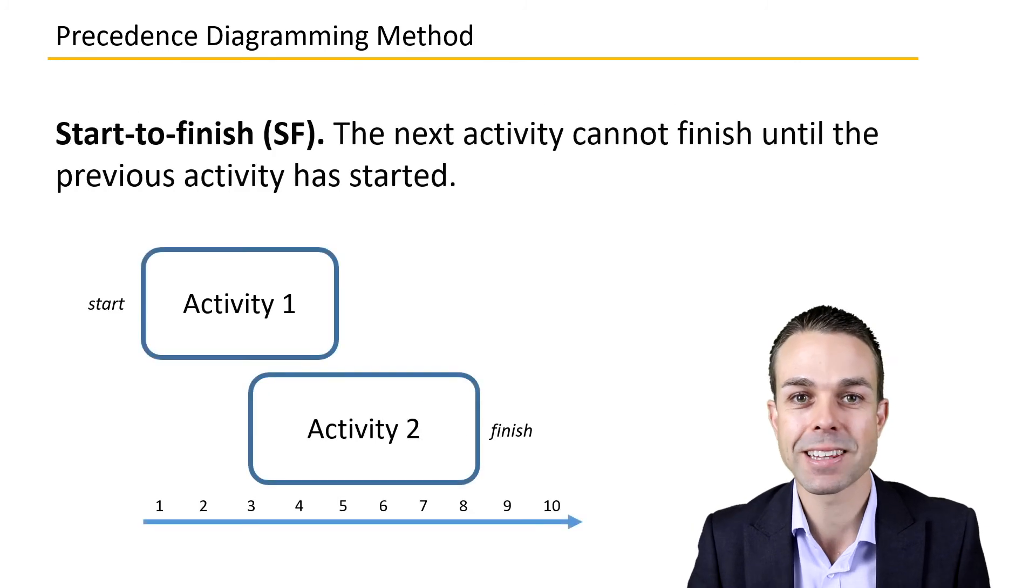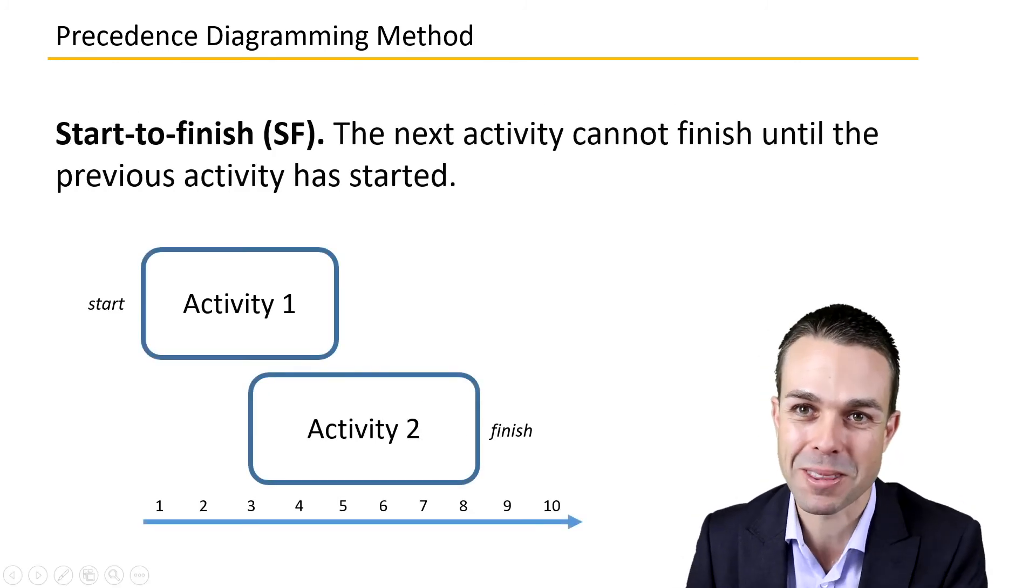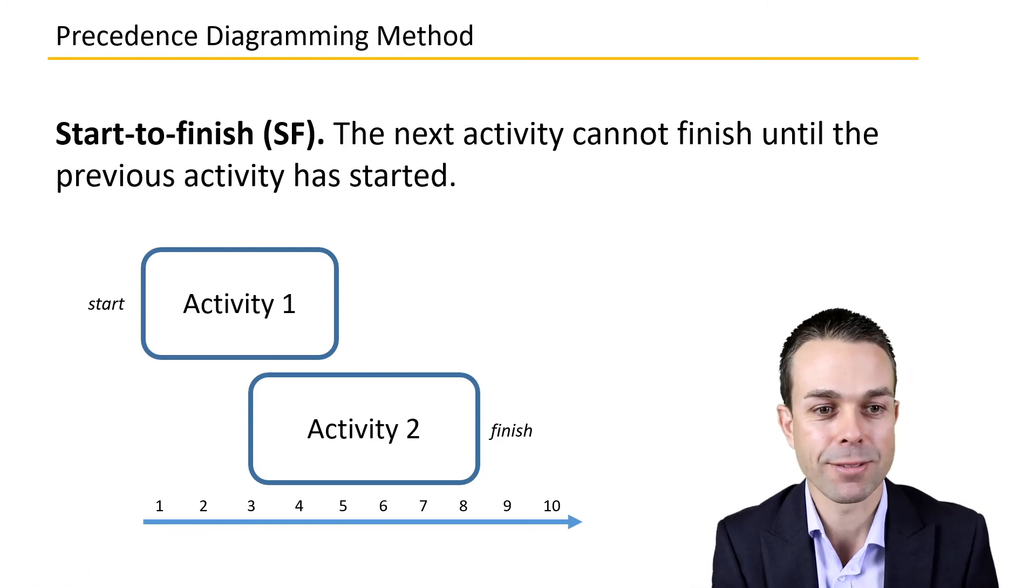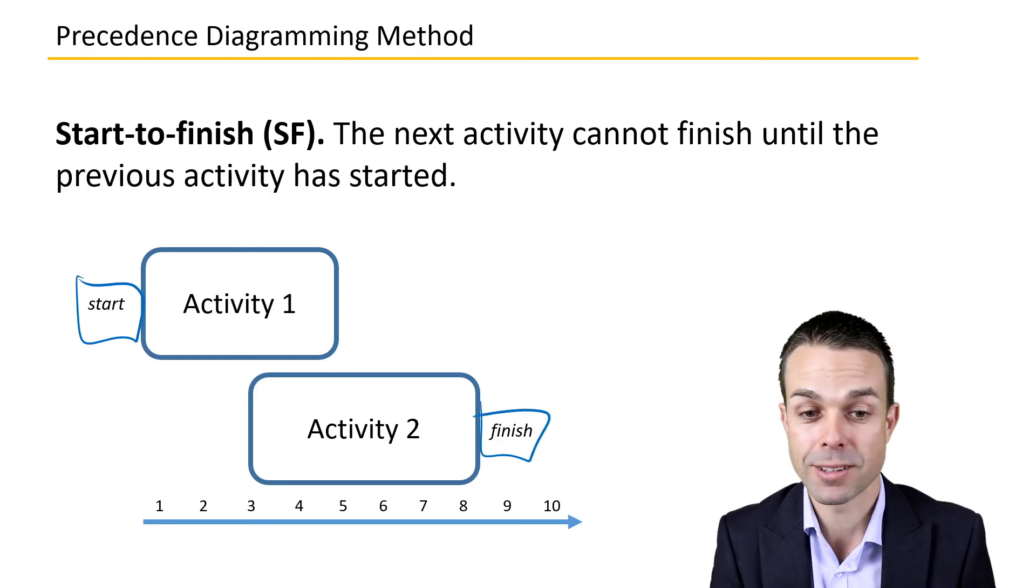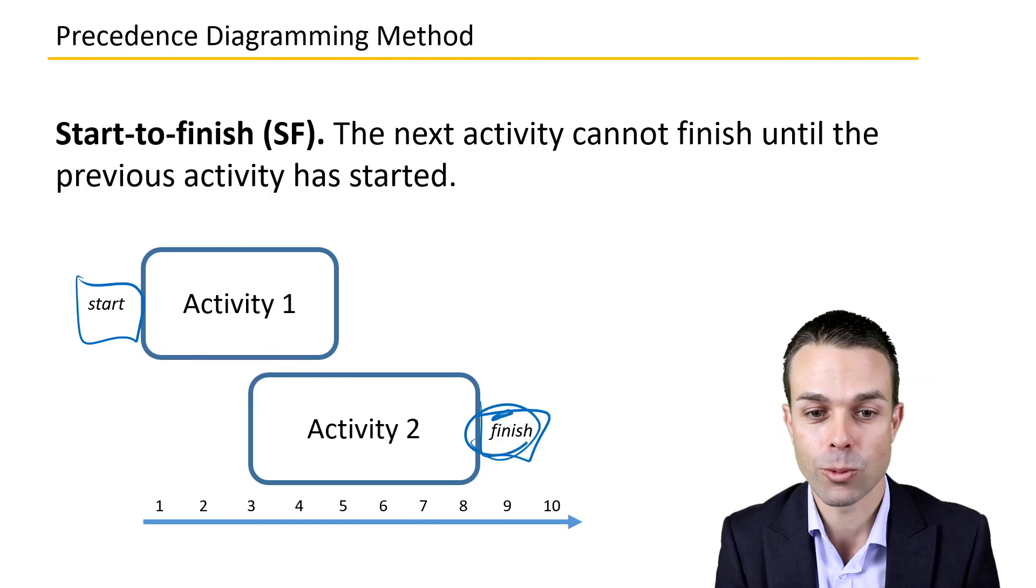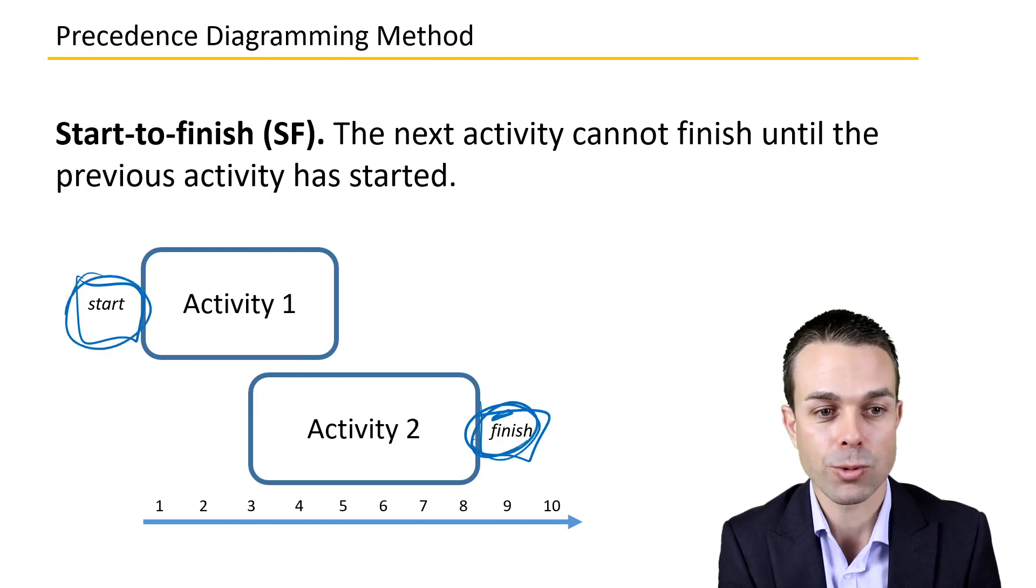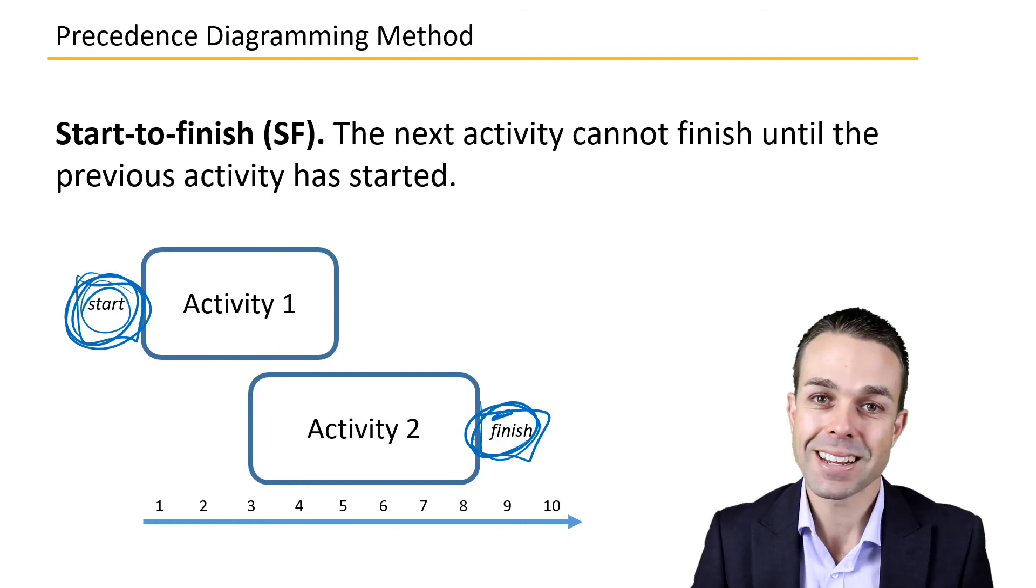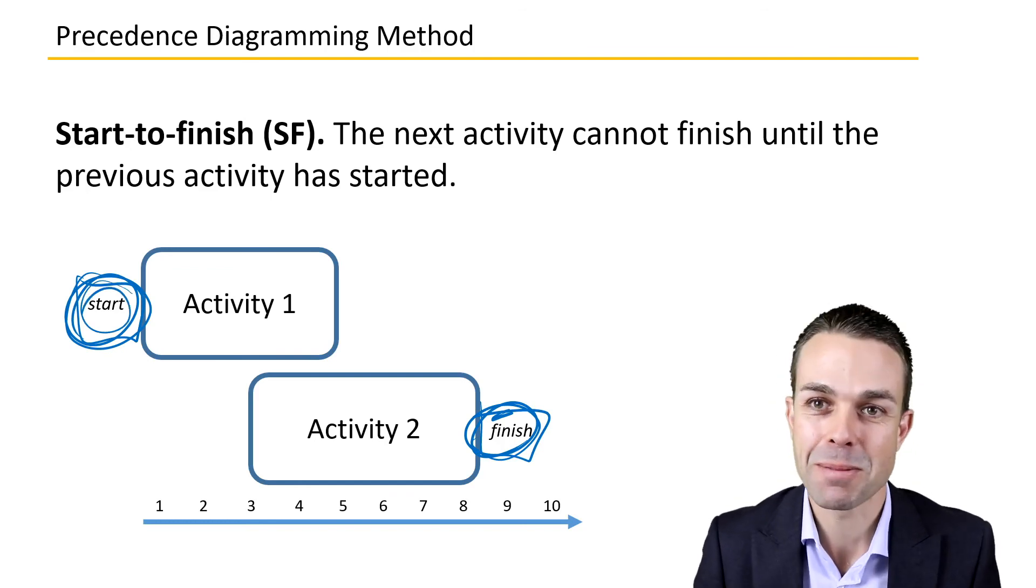Lastly, we have start-to-finish. Can you guess what this one will be? The next activity cannot finish until the previous activity has started. So the second activity cannot finish until the first one has started—it's dependent on the first one starting. And that is the idea behind the Precedence Diagramming Method.